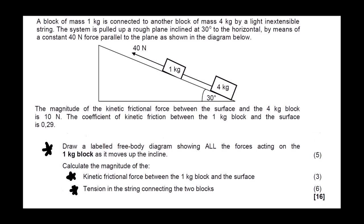The magnitude of the kinetic frictional force between the surface and the 4 kg block is 10 newtons, so Fk for this one is 10 newtons. The coefficient of kinetic friction between the 1 kg block and the surface is 0.29.